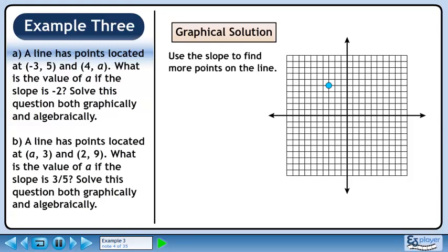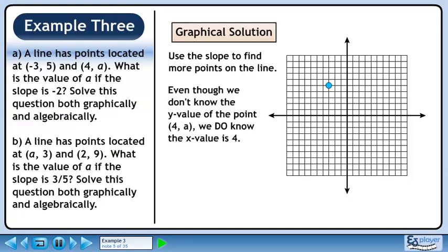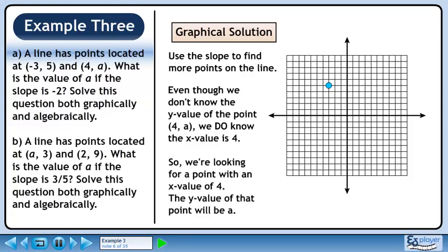Use the slope to find more points on the line. Even though we don't know the y-value of the point (4, a), we do know the x-value is 4. So, we're looking for a point with an x-value of 4. The y-value of that point will be a.